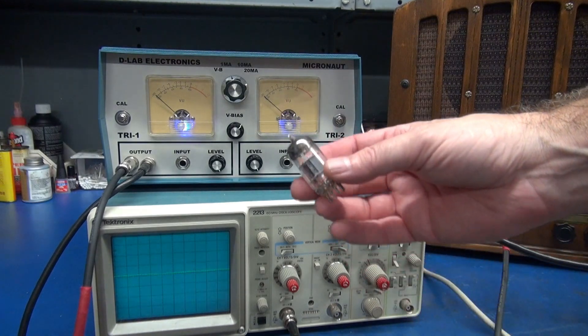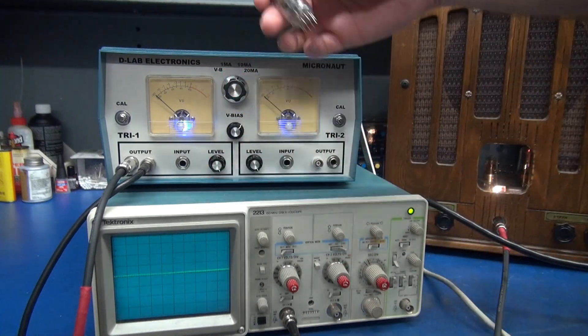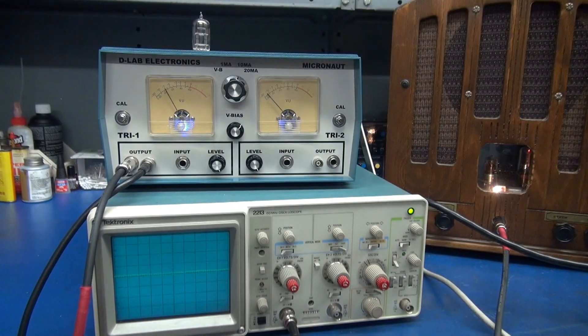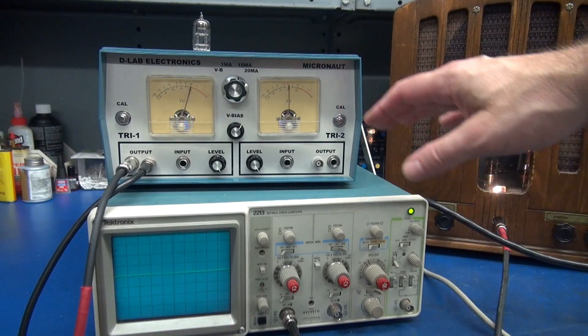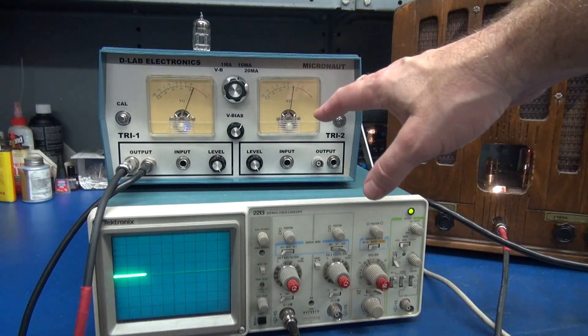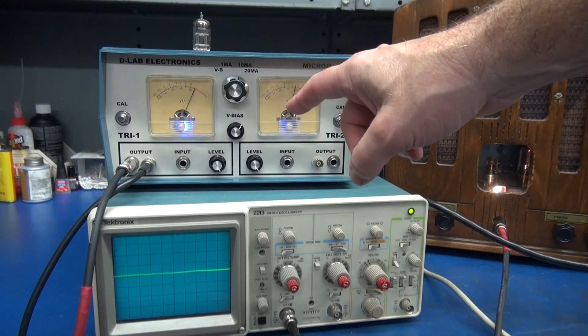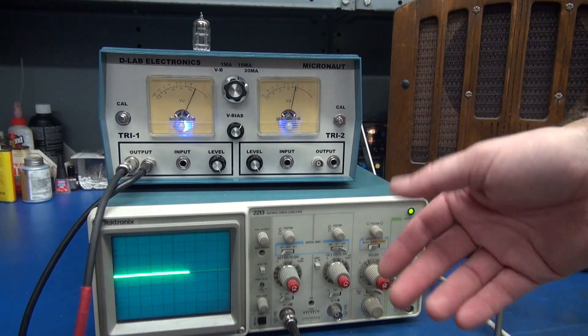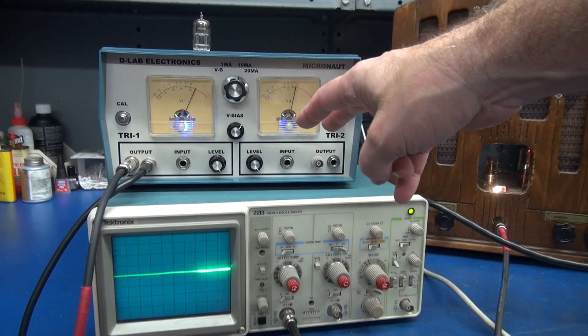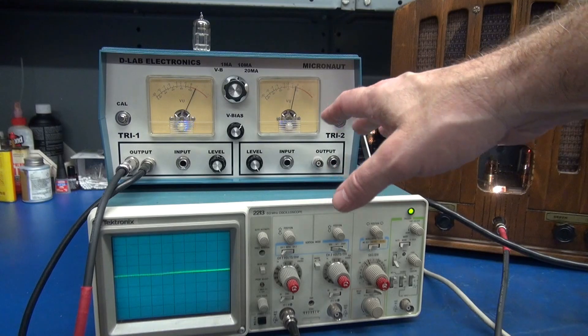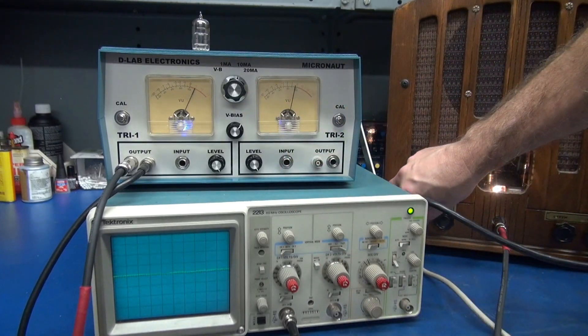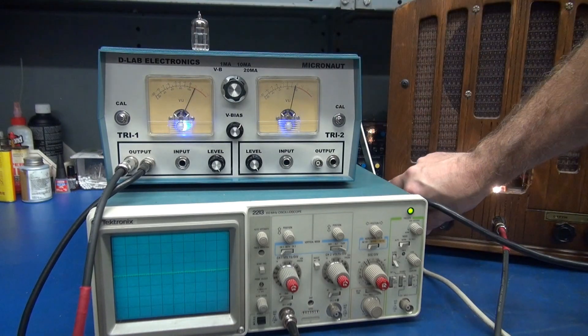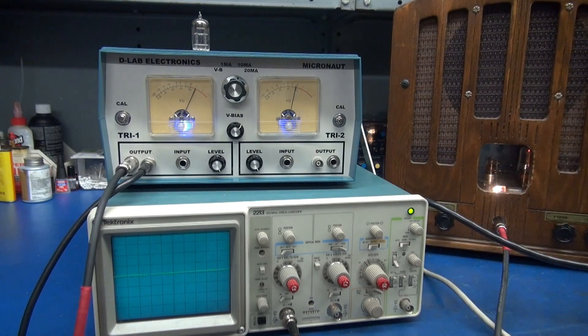Now we'll test a 12AT7. Our current has to go to 10 milliamps for this tube. Plug it in, wait for it to warm up. Now one thing that's nice about these meters is it shows you the gain of that tube. So if you're looking to balance a 12AT7 for, say, a phase inverter, this is a good indication that this tube is healthy on both triodes. Let's take a listen to it for microphonics. Pretty clean tube.